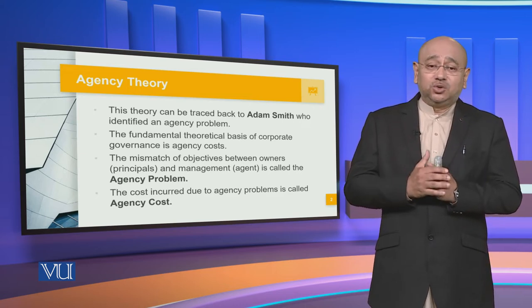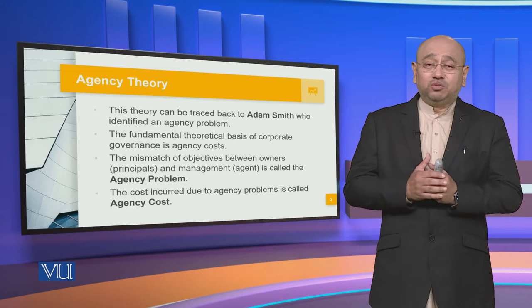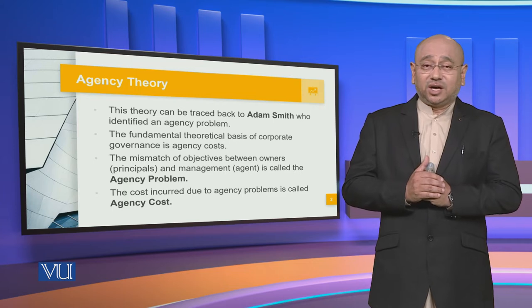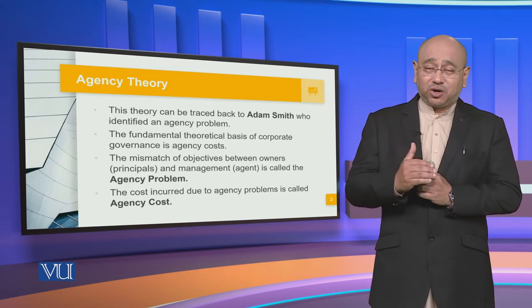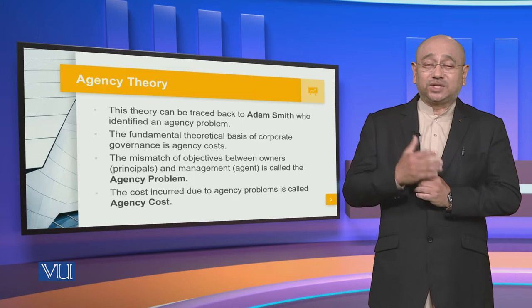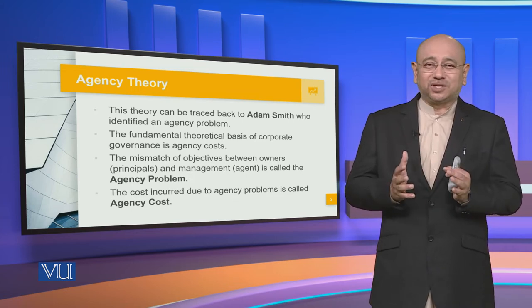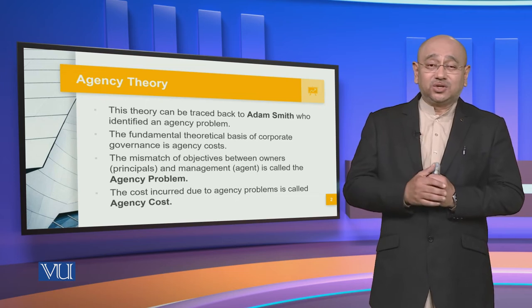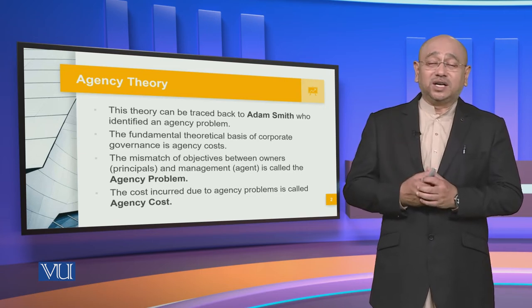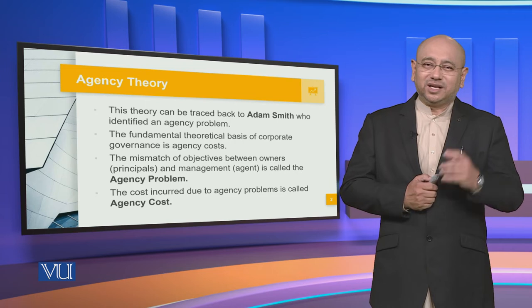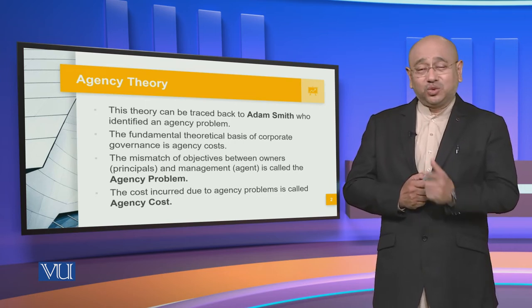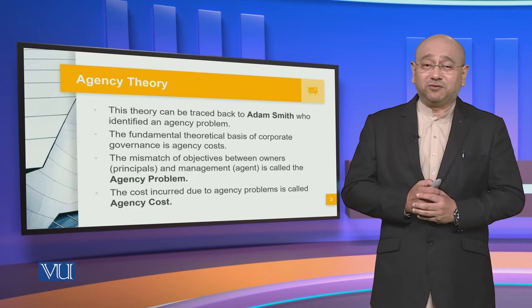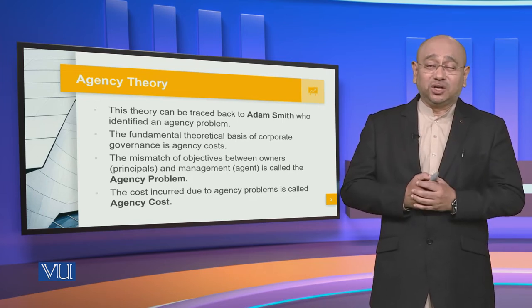The cost incurred to do away with or to bear the differences of the agency problem is called the agency cost. When there is a conflict, a misunderstanding, or something which leads to a stalemate and stagnation, there is a huge cost involved, and that is called the agency cost. It is very important that the management, the shareholders, and the board work hand in hand — otherwise it could lead to an agency problem with agency costs that can be phenomenal and very damaging, potentially leading to the closure of the company.